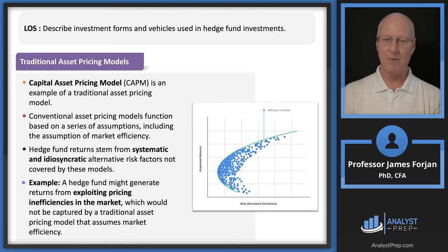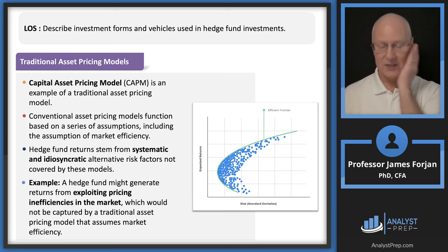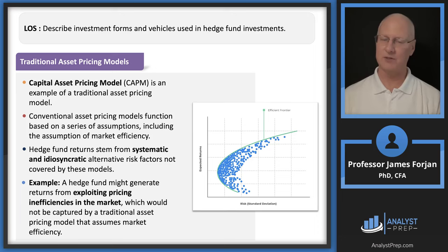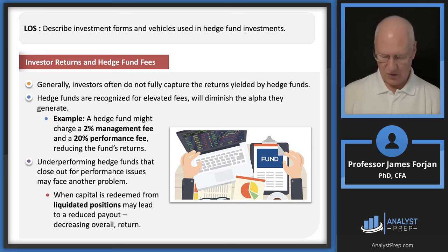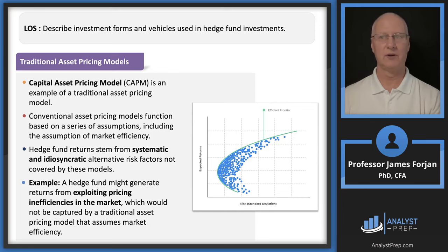The efficient markets hypothesis tells us that if pricing inefficiencies exist, they only exist for a short time period — and in the hedge fund universe, exactly how long that period is remains unclear. How can you use CAPM to evaluate hedge funds? The answer is you can, but we're not fully there yet. A great exam answer: it's a good starting point to evaluate and find over- and undervalued securities.